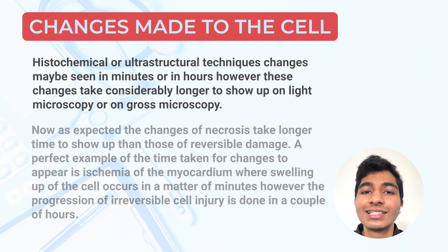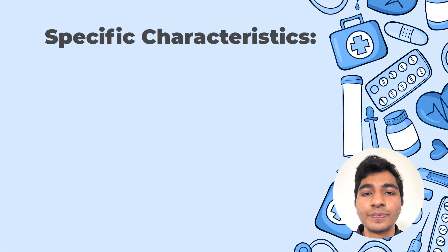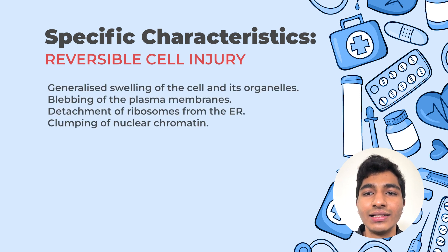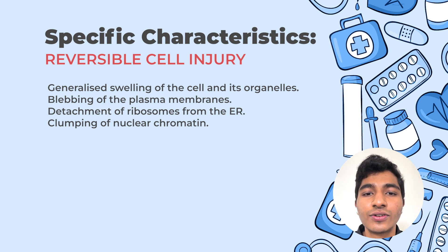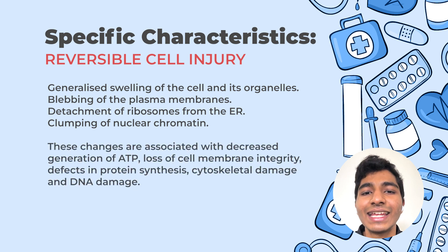Now we will look at the specific characteristics of reversible cell injury. It is characterized by generalized swelling of the cell and its organelles, blebbing of the plasma membranes, detachments of the ribosomes from the endoplasmic reticulum — therefore proteins won't be metabolized — and clumping of nucleochromatin.